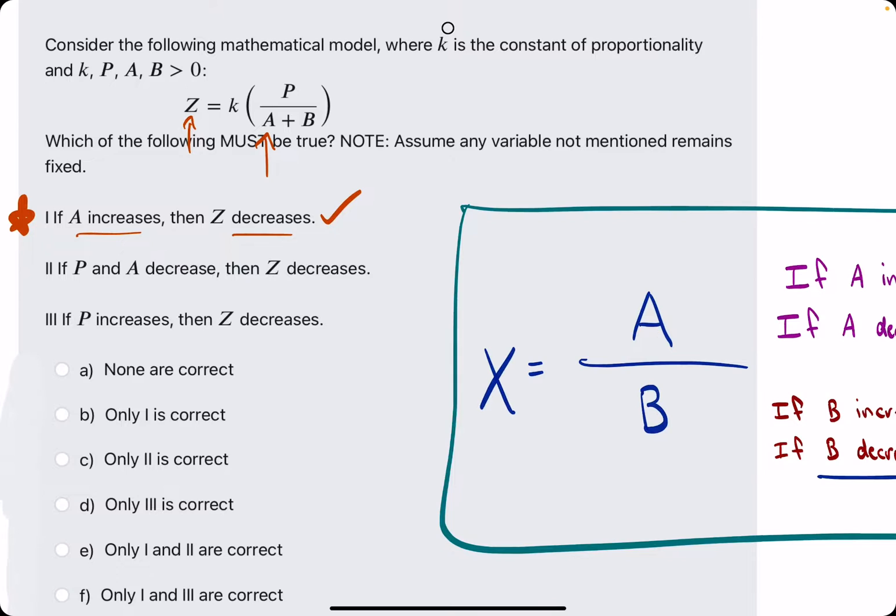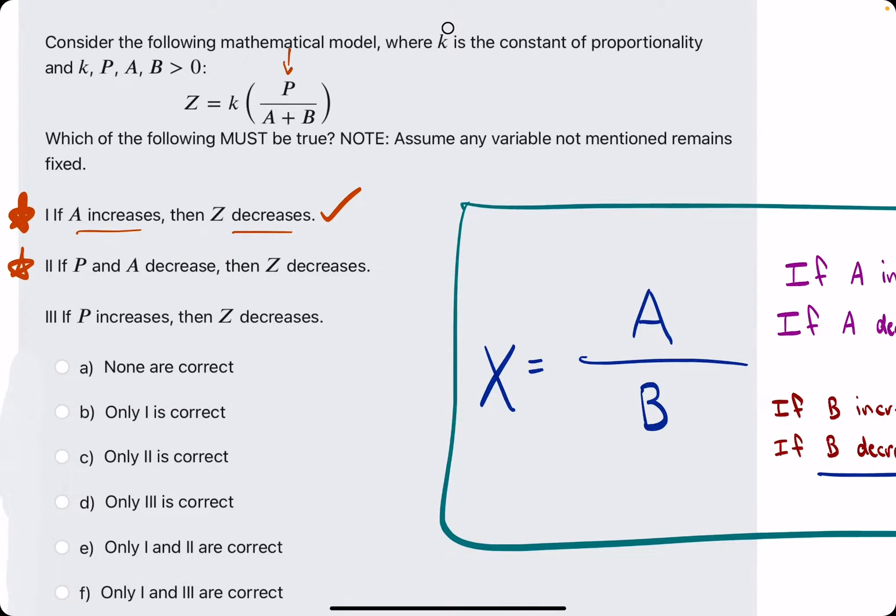Number two: if P and A decrease, then Z decreases. P is in the numerator while A is in the denominator. So if they both decrease, it looks like Z would probably decrease a little bit but also increase a little bit from A decreasing. It's hard to say because P decreasing and A decreasing would have opposite effects on Z.